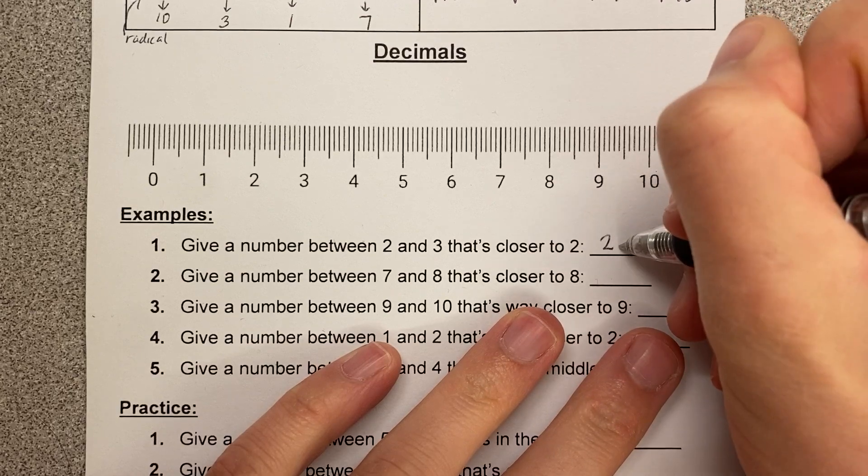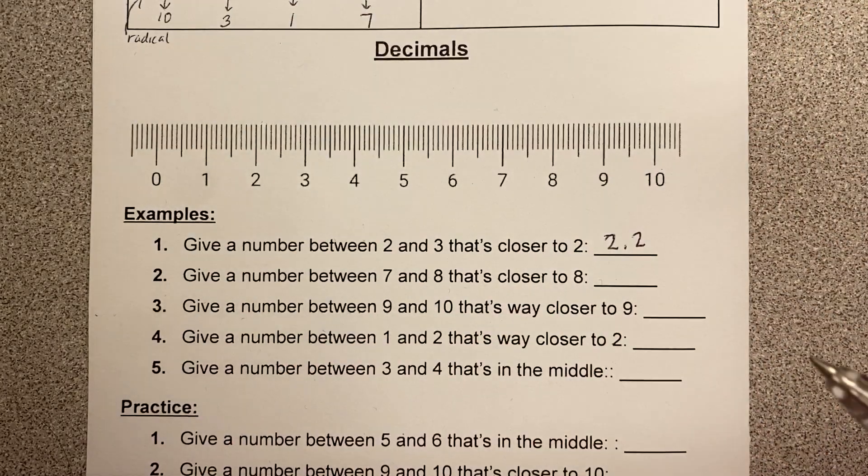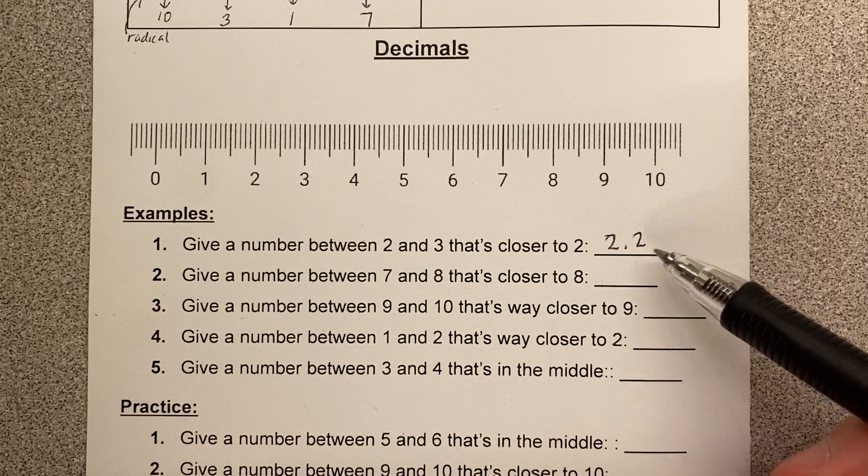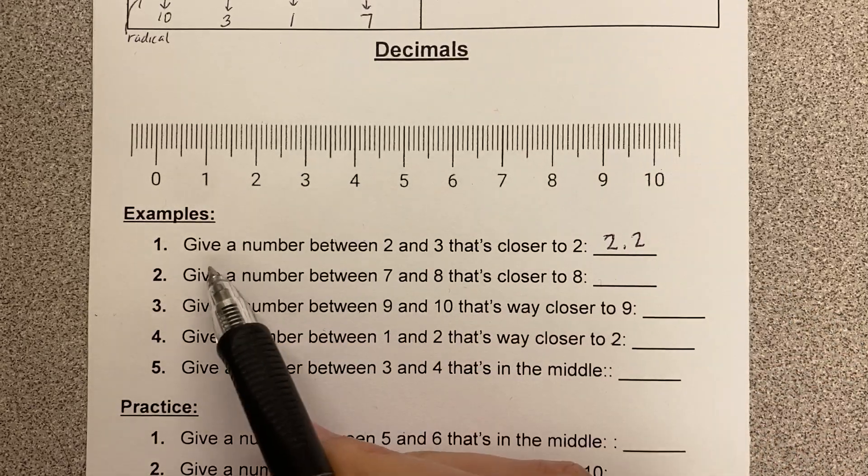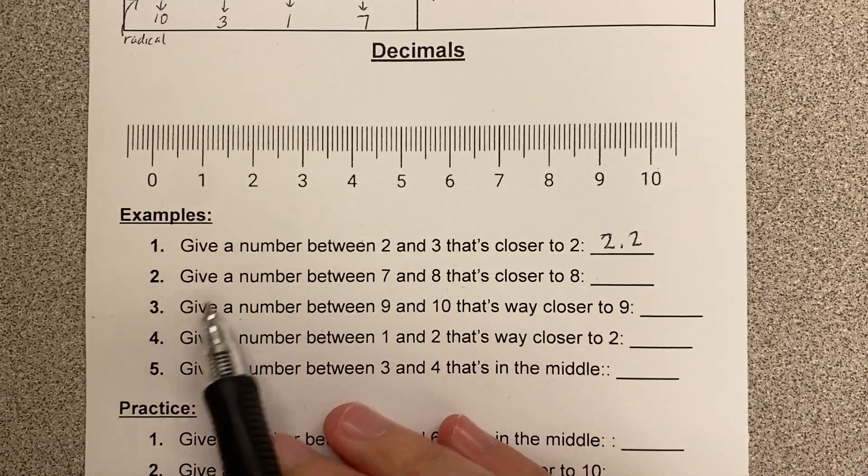So look, I'm going to put 2.2, but I want to be clear. You could also put 2.1, you could put 2.2, you could put 2.3, you could put 2.4. All of those would be a correct answer to this. That's between 2 and 3, closer to 2.